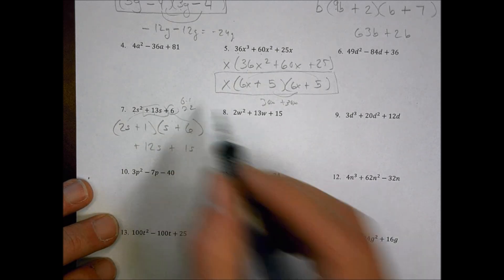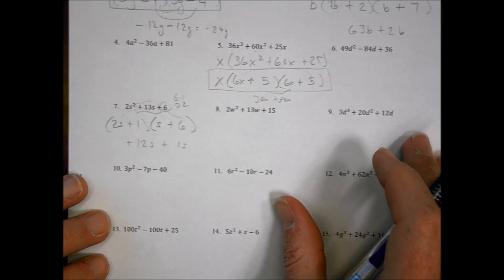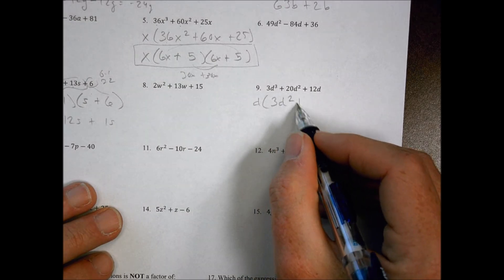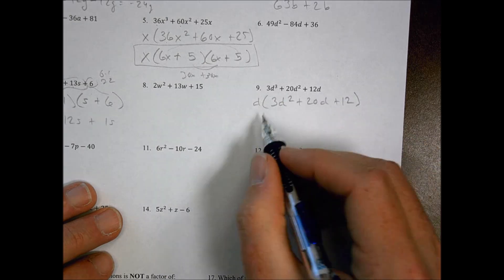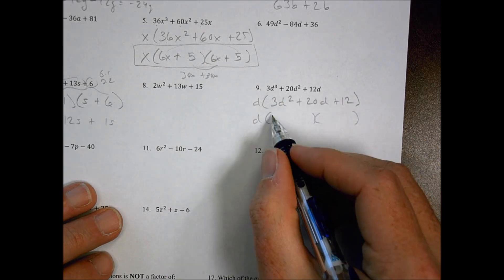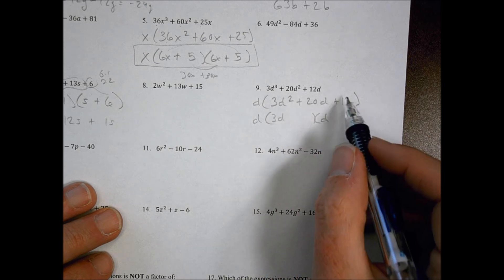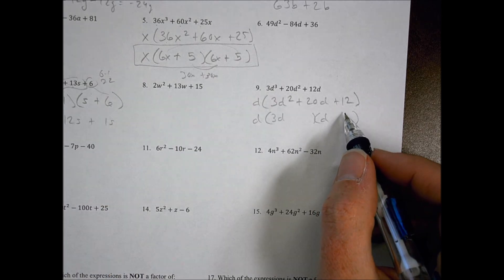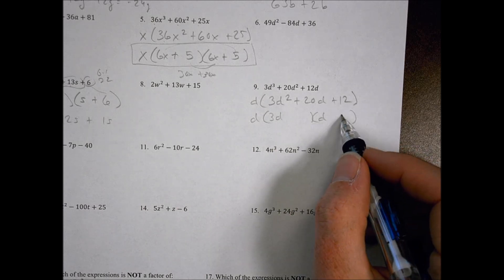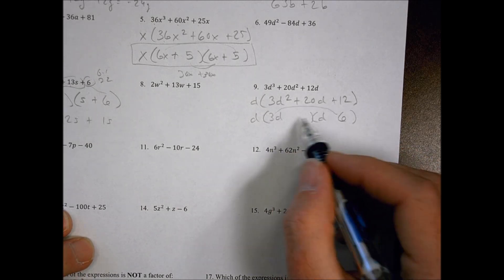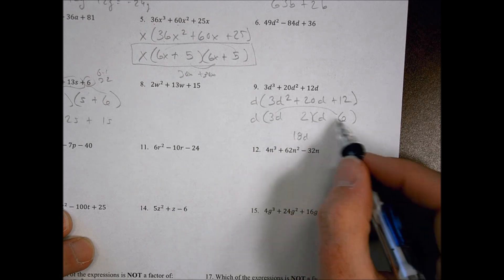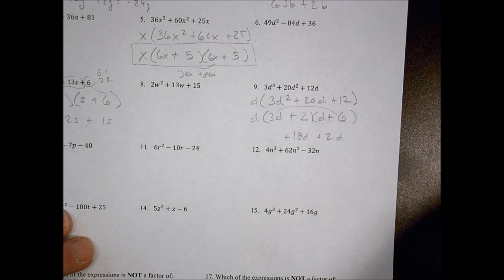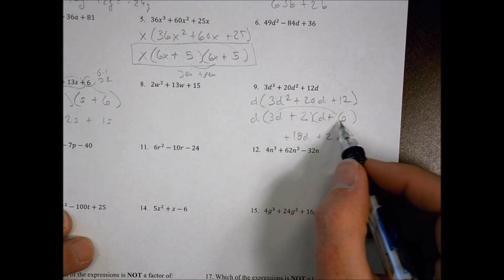Problem 9: I can factor a d out of everything, leaving d(3d² + 20d + 12). Now I factor the trinomial: 3d and d for the leading term. For 12, I need to reach 20. A 6×2 split gives 18d plus 2d, which adds to 20d — both positive. So the answer is d(3d + 2)(d + 6).